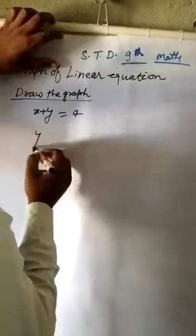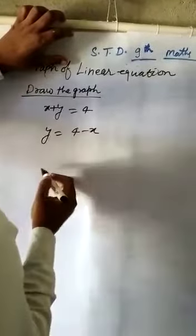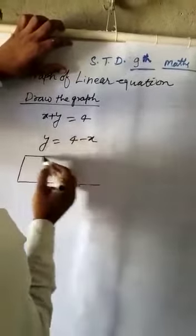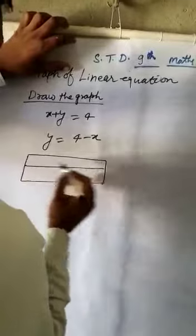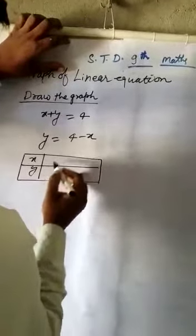Here y equal to 4 minus x. Prepare a table in x, y. Calculate minimum 3 points.